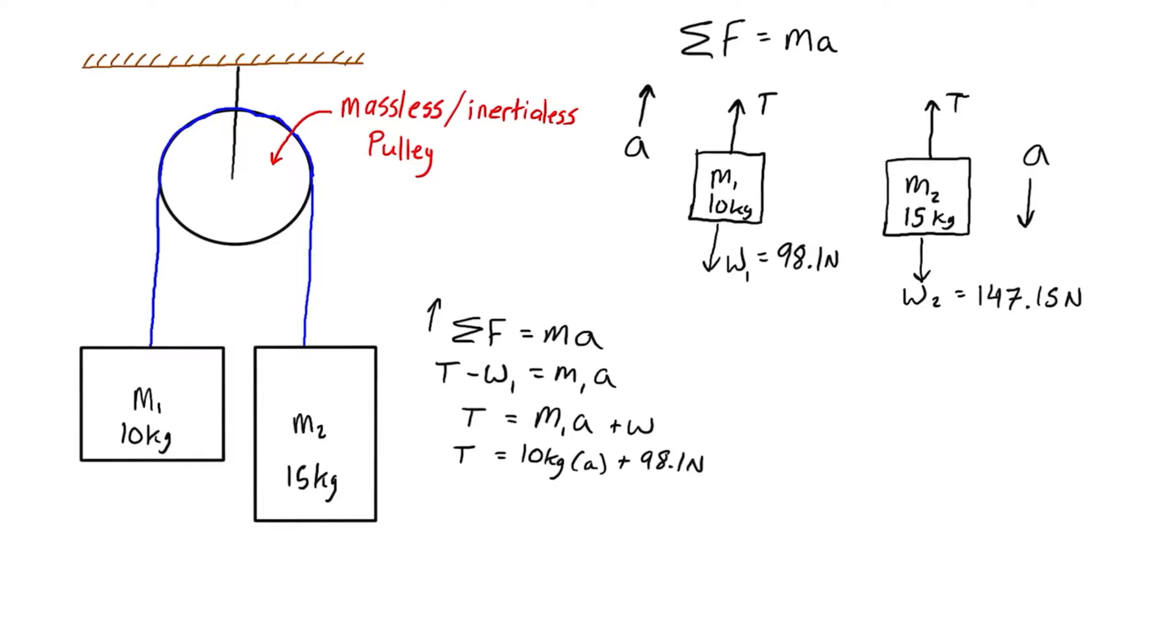Now let's go to the other mass and do the same thing. Sum of forces equals mass times acceleration. The motion is downward, so we're taking down as the positive direction. In that case, w2 is in the positive direction, so it's w2 minus T equals m2·a.